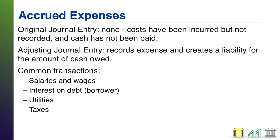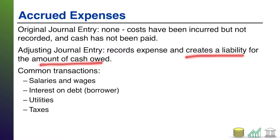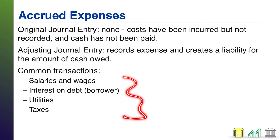The adjusting entry is: you get to the end of the period, you do your trial balance, you look at your financials, and you say, wait a minute, where's this cost? This thing happened, but we don't have a cost recorded for it yet. So at that point, we're going to record the expense because we know we incurred that cost, and we're going to create a liability for the cash that will be paid out later related to that expense.